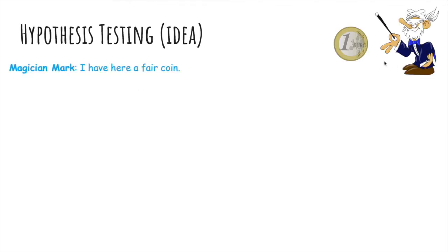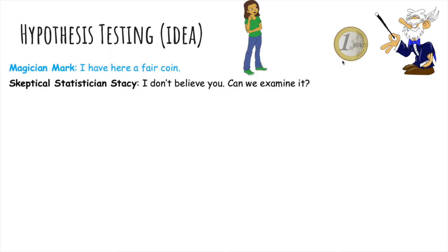So here's the idea. We have this magician named Mark, and he says, I have a fair coin here. And then in the audience, there's a skeptical statistician named Stacy, and she says, I don't believe you. Can we examine it?